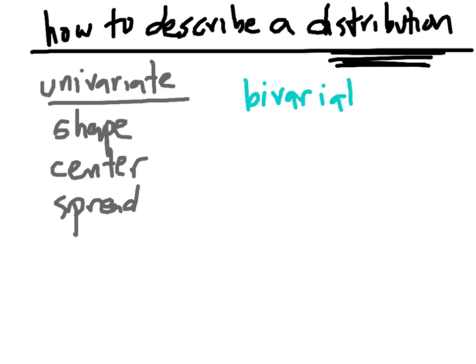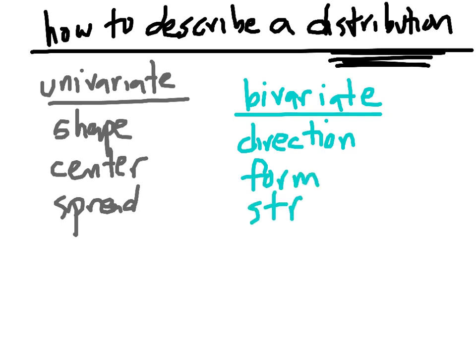Now we're going to have a slightly different list when we talk about bivariate data, because it doesn't really make sense to talk about the center of a scatterplot. Now when we talk about bivariate data, we're going to talk about direction, form, and strength.